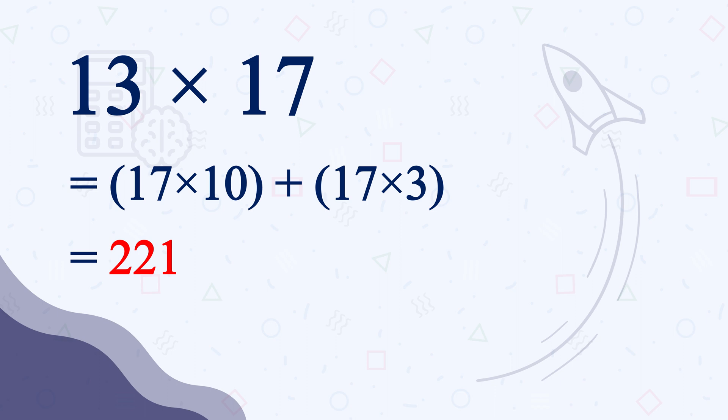So the final product of 13 times 17 is 221. You may find it difficult now but after practicing regularly in your mind, you will see that you just need a second to break down and calculate in your mind and visualize the number in the air.